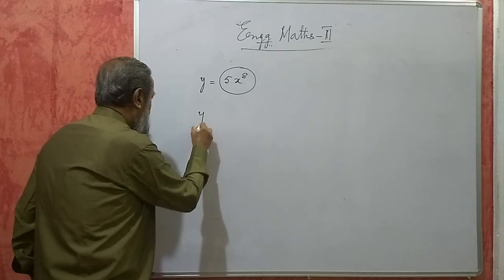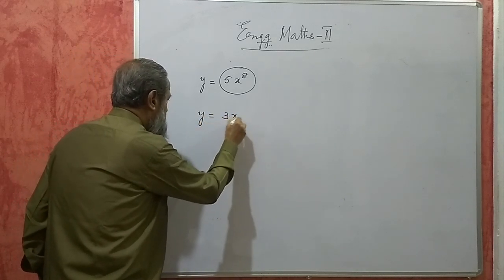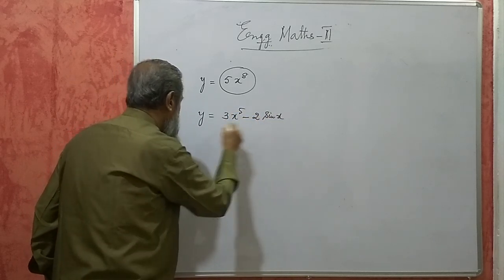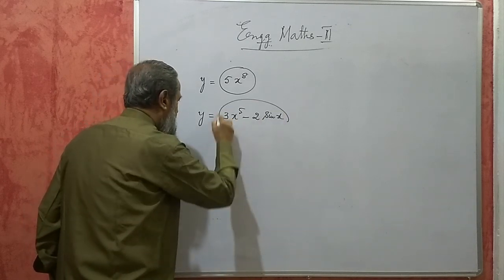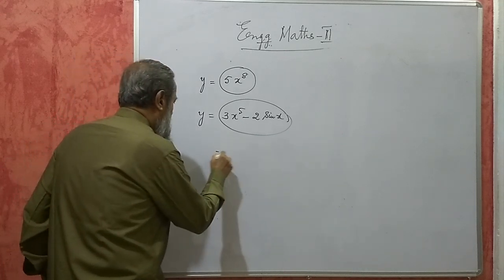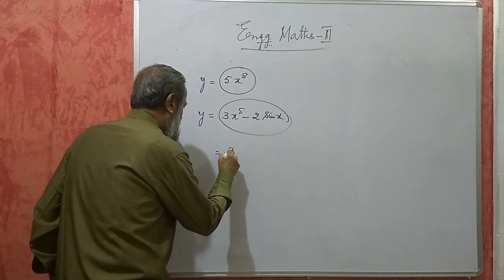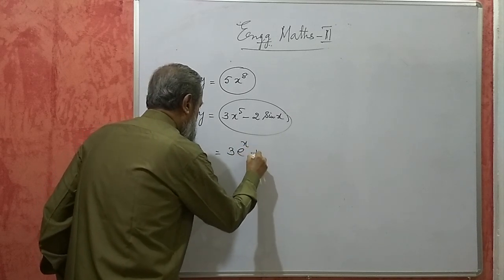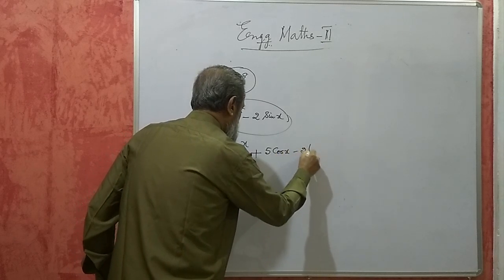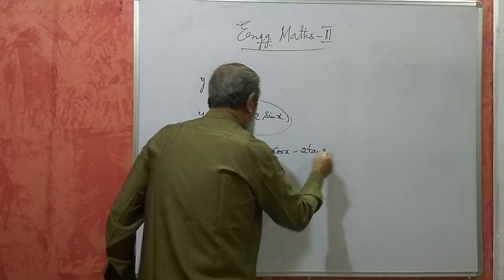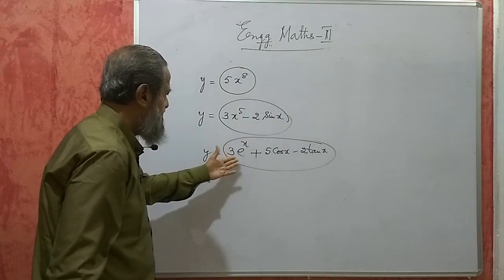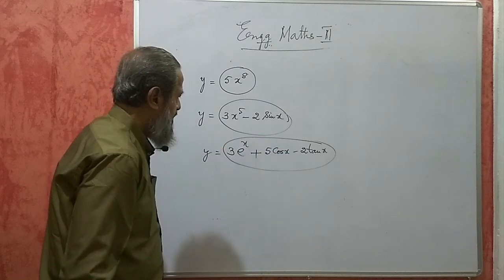Now suppose I have y is equal to 3x to the power of 5 minus 2 sin x. Again this is a function of x. Now this will be called as a binomial expression. If I have 3e to the power of x plus 5 cos x minus 2 tan x, and if y is equal to this, then this is called as a trinomial expression.